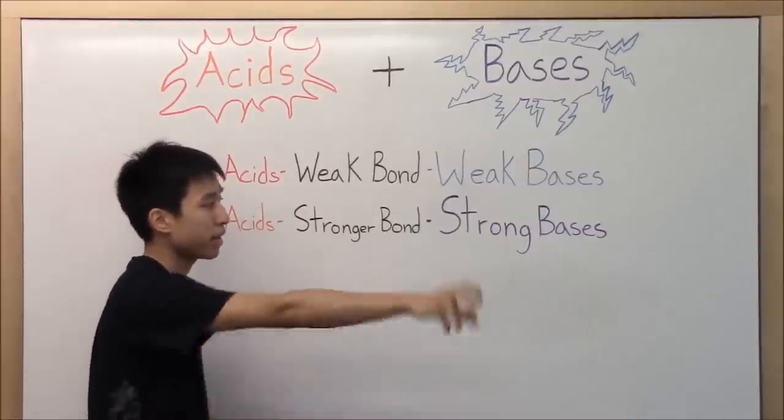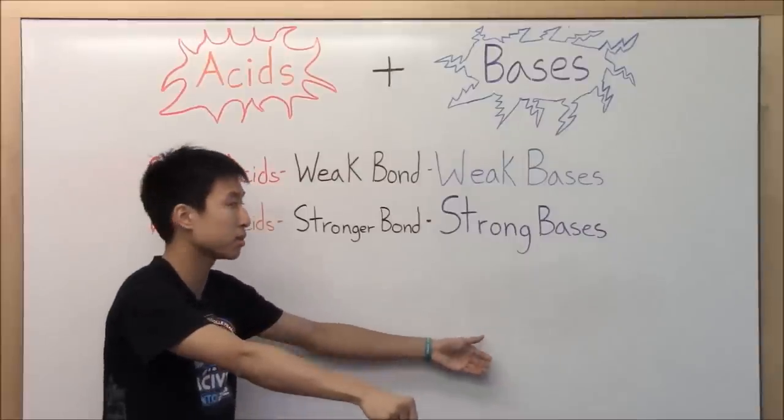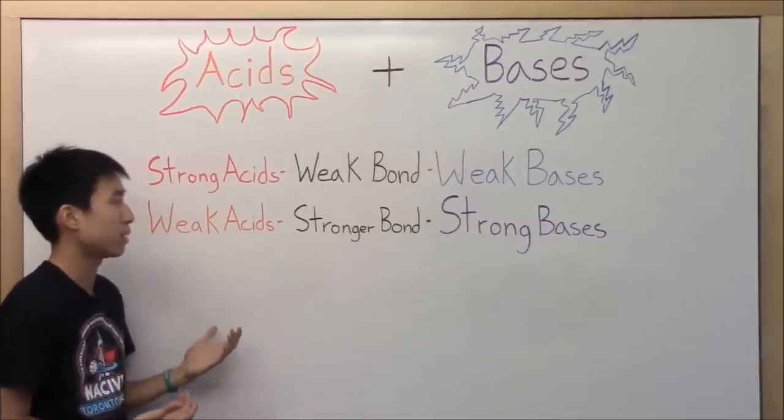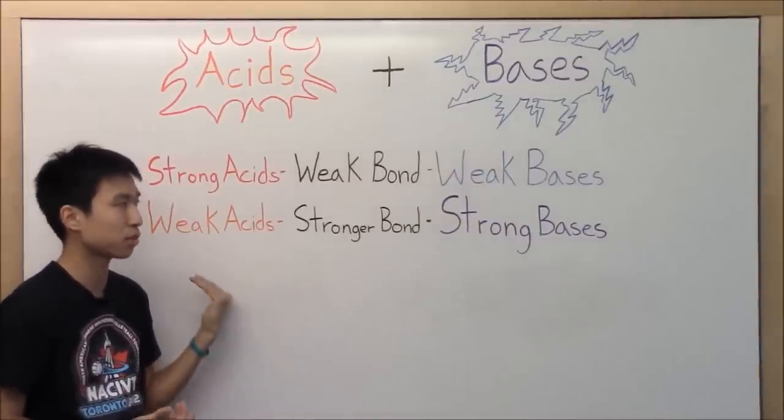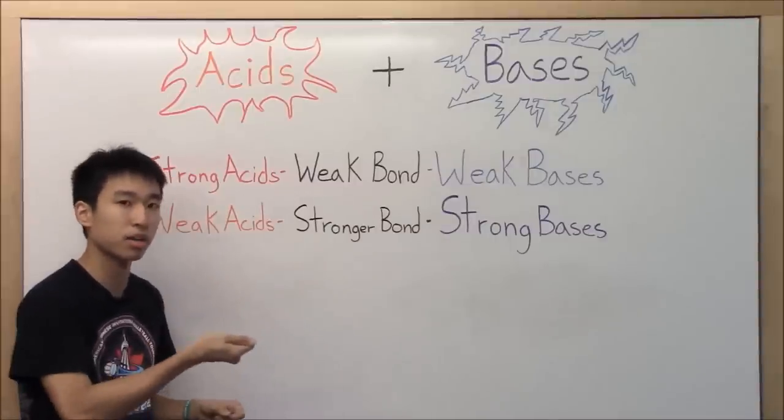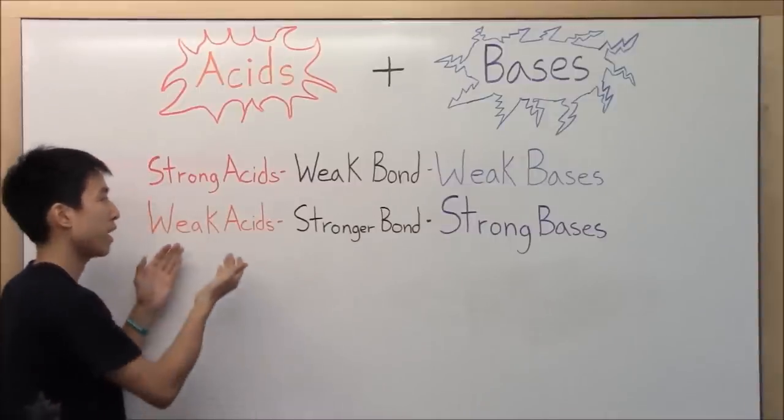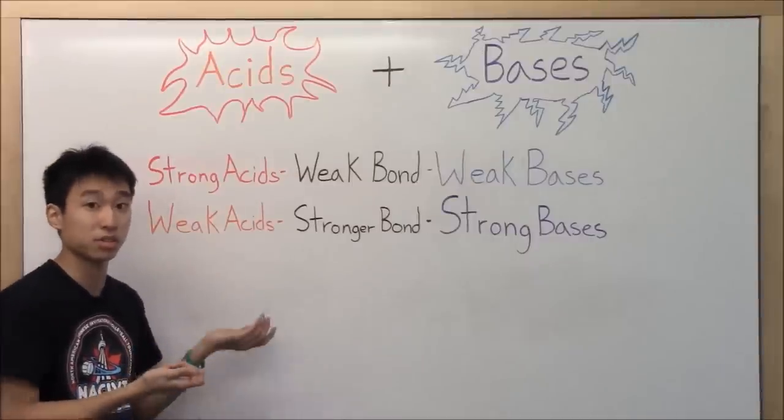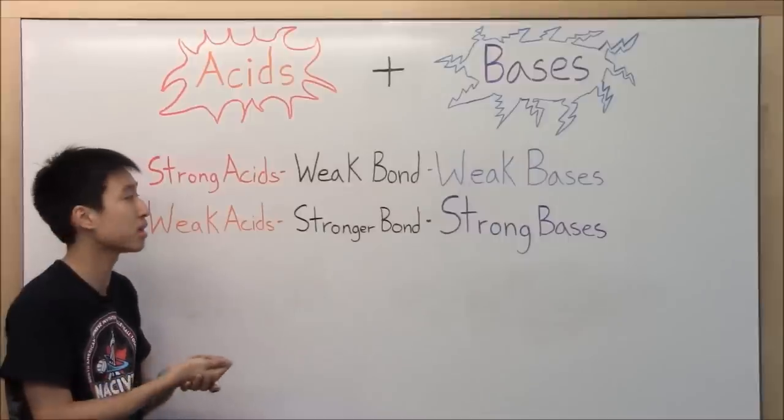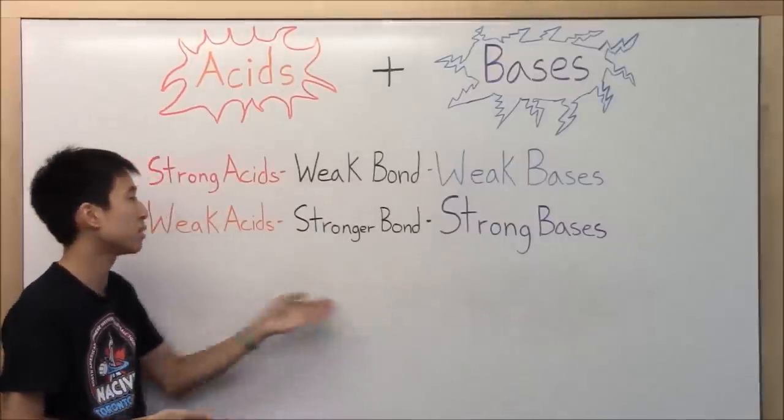So when they grab onto the hydrogen, they instead go into their acid forms which is called conjugate acids. And when they go into their conjugate acid forms, these strong bases, since they can maintain a nice strong bond, they can't do their job as an acid very well, which is to throw away the hydrogen, because they can maintain such strong bonds.